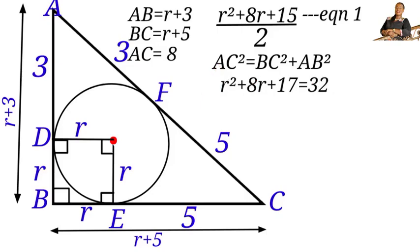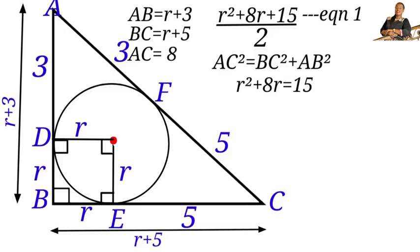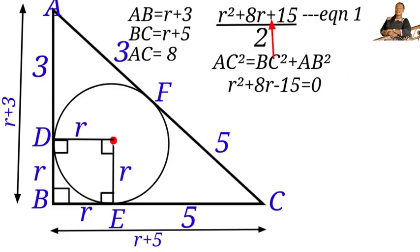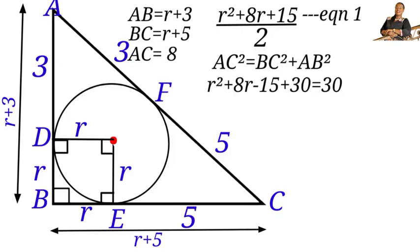Cancelling the factor of 2, we have R² + 8R + 17 = 32. Moving 17 to the right-hand side gives R² + 8R = 15, and then R² + 8R − 15 = 0. Now, comparing with equation 1, we have a negative value here but a positive value in equation 1. To make this positive, we add 30 to both sides: R² + 8R − 15 + 30 = 30, which simplifies to R² + 8R + 15 = 30. Let us call this equation 2.